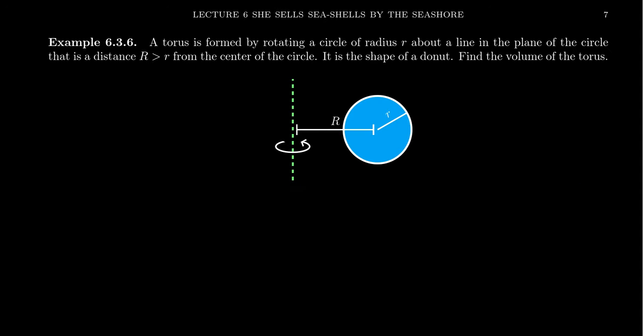So let's consider a torus, right? A torus is formed by rotating a circle like you see right here. You rotate a circle. Let's say the circle has a radius, little r, about a line in the plane. And let's say the distance from the center of the circle to the axis is capital R.